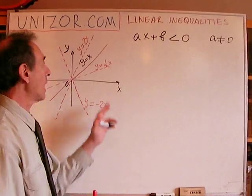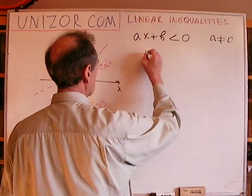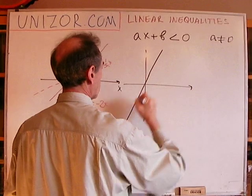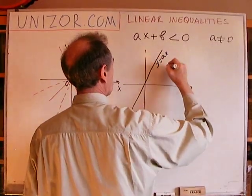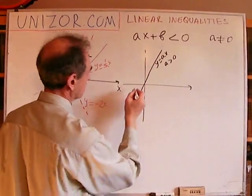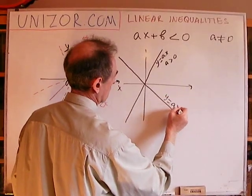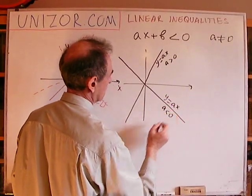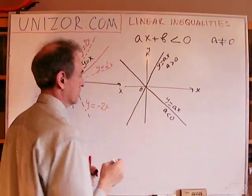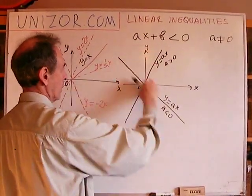So the first step is we multiply by a. Whatever the graph is, I will use the graph with a positive a — directed upward — and something like a downward-directed graph for negative a. These are the graphs for positive a and for any negative a.